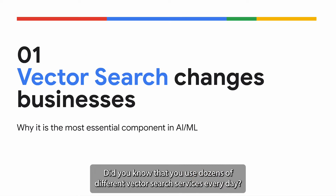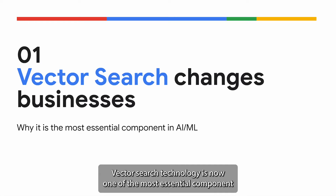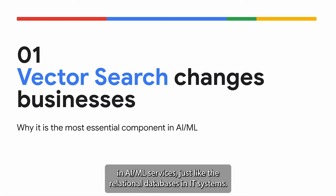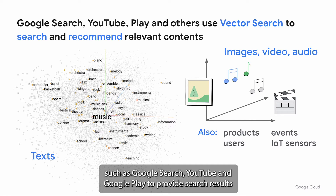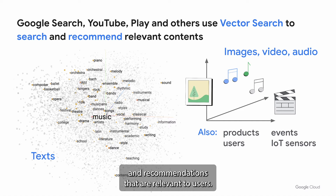Did you know that you use dozens of different vector search services every day? Vector search technology is now one of the most essential components in AI/ML services, just like relational databases in IT systems. For example, Google uses vector search to organize data across its various services, such as Google Search, YouTube, and Google Play, to provide search results and recommendations that are relevant to users.